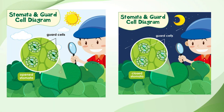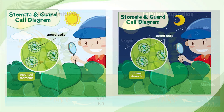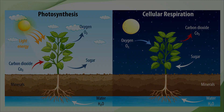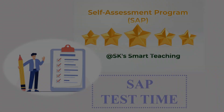Normally, stomata remain open during the day and close at night. So, during daytime plants take in carbon dioxide, and at night plants take up oxygen.